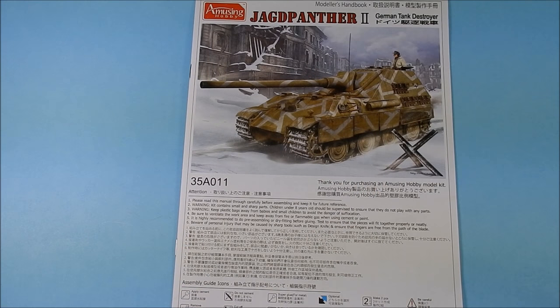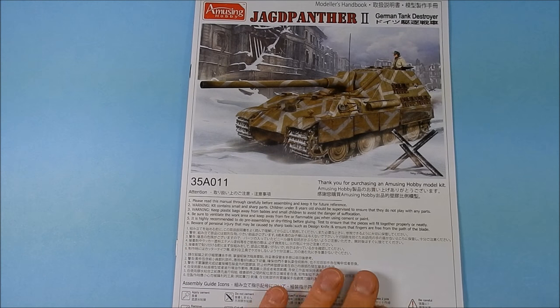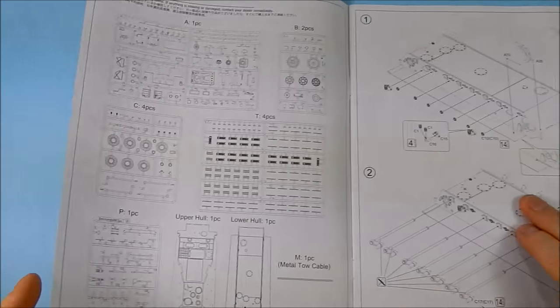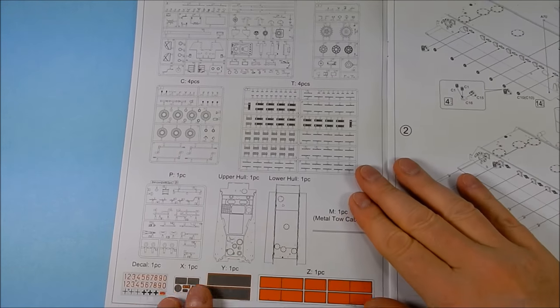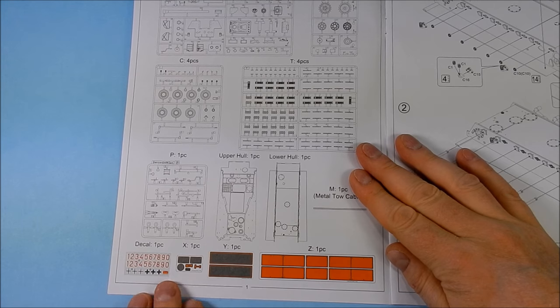I'll just change the camera angle and bear with me for a second. Instruction manual, it's 12 pages, 15 steps. Nice color front. We have a sprue map including all the photo etch.